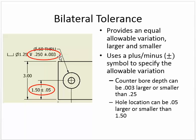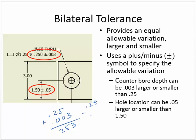A bilateral tolerance provides an equal allowable variation, larger and smaller, and uses a plus-or-minus symbol to specify the allowable variation. This counterbore has a depth of plus or minus 0.003, which means it can be smaller or larger by 0.003. So this part could be 0.25 plus 0.003, meaning as large as 0.253, or it could be smaller by 0.003, meaning as small as 0.247.